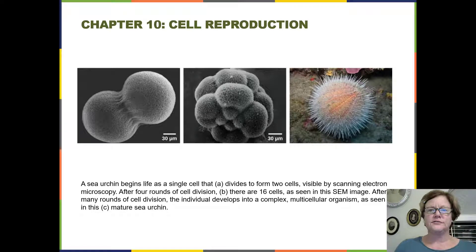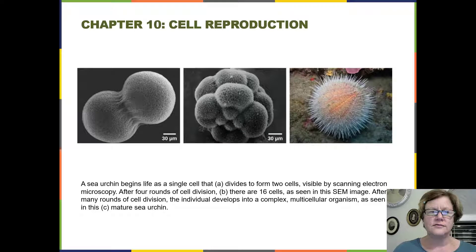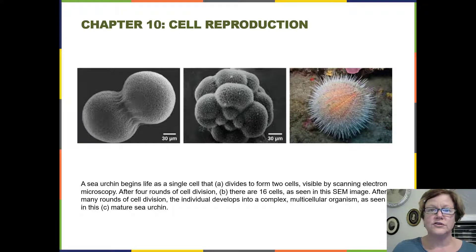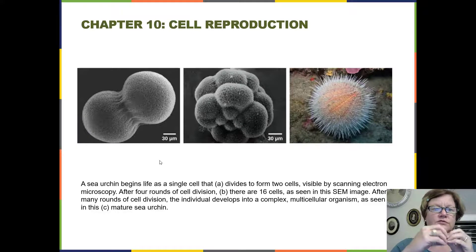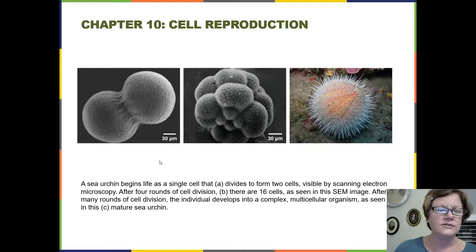Chapter 10 covers cell reproduction. We're going to be talking about cell division — specifically the type that starts with one cell and, when the cell goes through the whole process, produces two cells that are exactly the same as each other and exactly the same as the cell we started with. The picture here shows cell division of a sea urchin, starting with the fertilized egg. The first image on the left shows the single cell already most of the way through the first division — the first cytokinesis, the separation of one cell into two distinct cells.